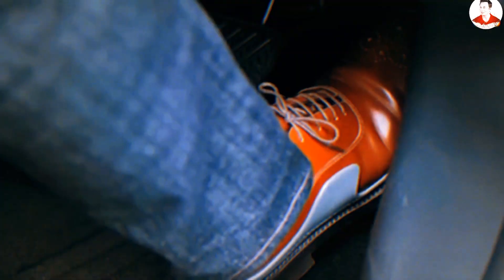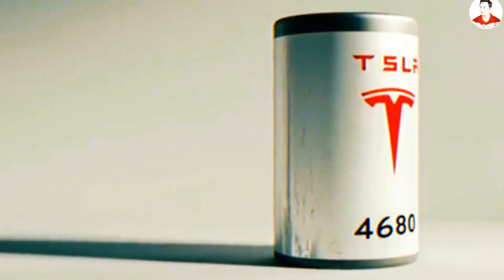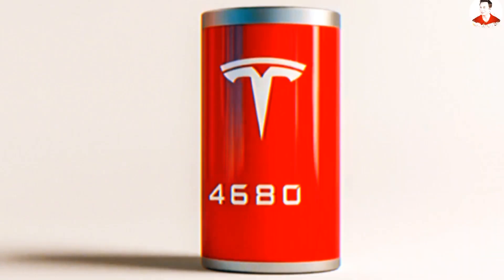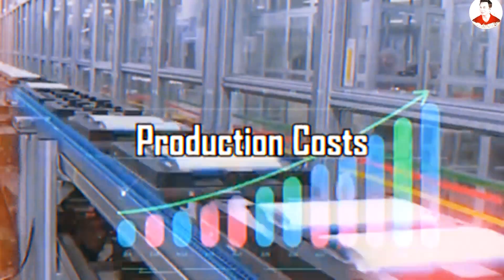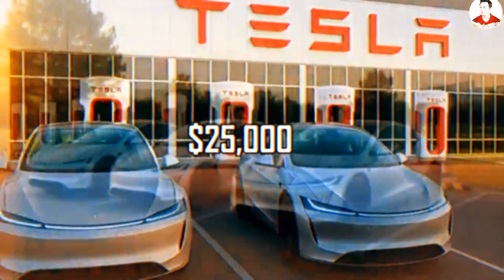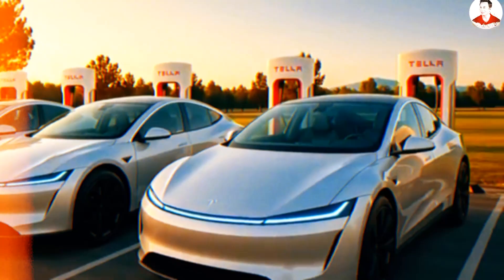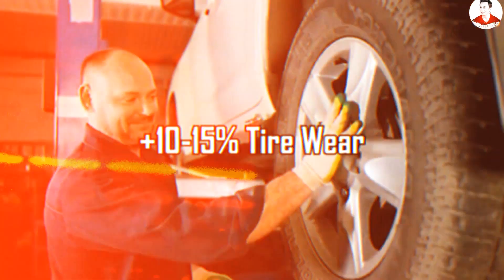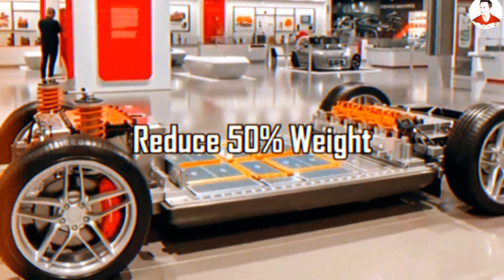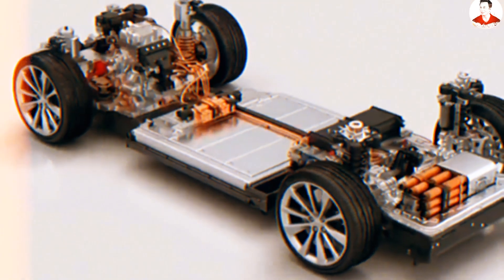This massive weight penalty destroys range and agility, turning what should be nimble city cars into sluggish beasts. Take a typical 40 kilowatt-hour lithium-ion battery. It weighs approximately 770 pounds, dragging down efficiency and skyrocketing production costs, which directly conflict with Tesla's ambitious $25,000 price target for the Model 2. These heavy batteries don't just hurt performance. They raise tire wear by 10 to 15 percent and increase maintenance costs by $1,000 to $2,000 over 100,000 miles. What if Tesla could slash that weight by 50 percent, making the 2026 Model 2 the ultimate affordable EV?